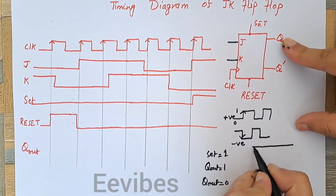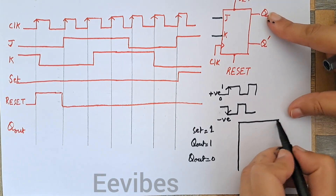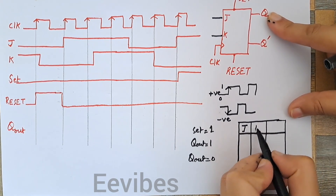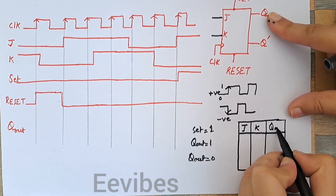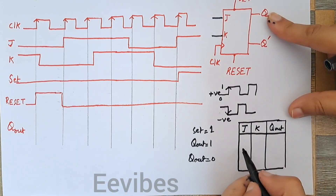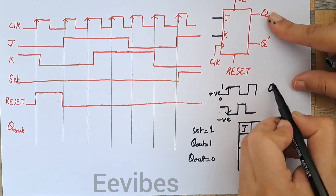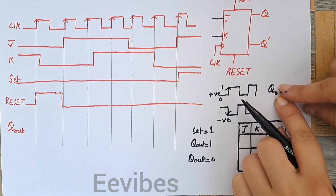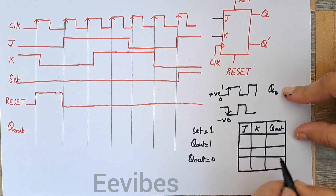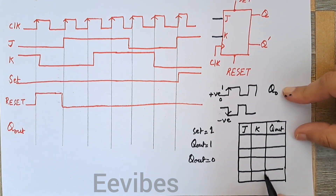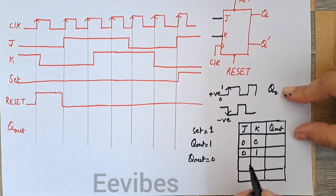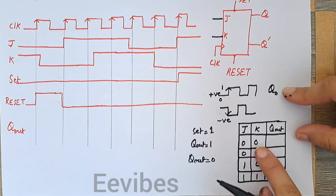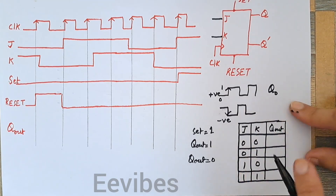Now let's look at the truth table of the JK flip-flop. There are two main inputs: J and K, and the output Q. We represent the initial state by Q₀. There are four two-bit combinations: 00, 01, 10, and 11. When both inputs are 0, the flip-flop stays in the retaining state — whatever the value of Q₀ was, it will retain it.